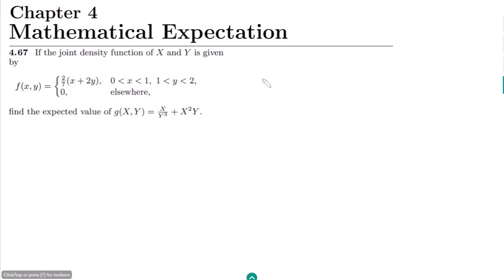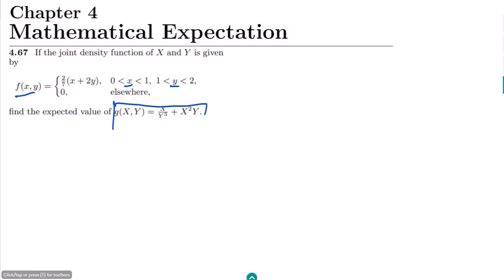This is question 4.67. The joint density function of x and y is given by f(x, y) = (2/7)(x + 2y), for x in (0, 1) and y in (0, 1), which is a continuous probability density function. We have to find the expected value of g(x, y) = x/y³ + x²y.